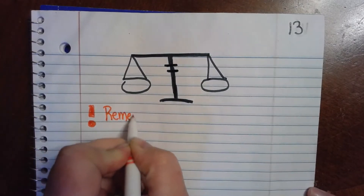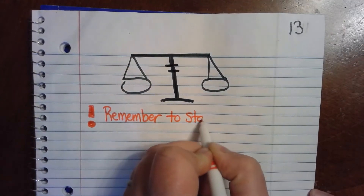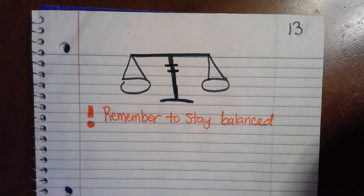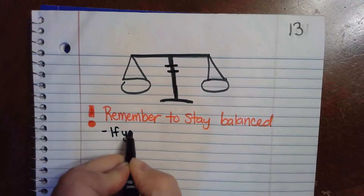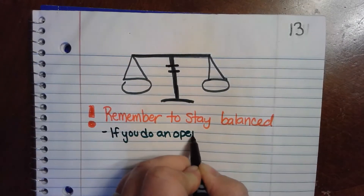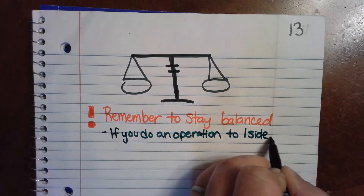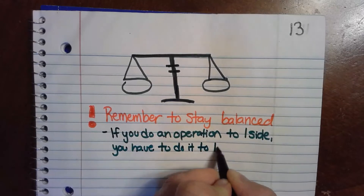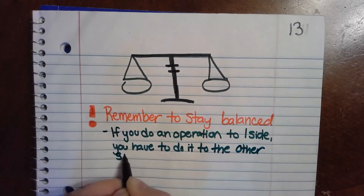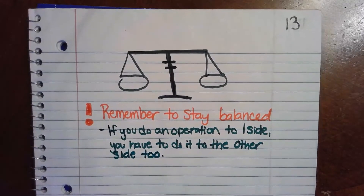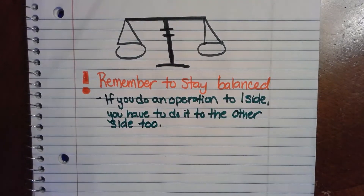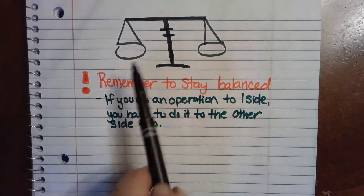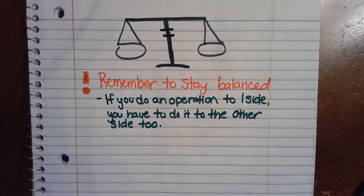We need to remember to stay balanced. What that means is: if you do an operation to one side, you have to do it to the other as well. Anytime we're working with equations, this is a very important rule. If you add five to this side, you have to add five to this side. If you subtract five from this side, you have to subtract five from this side — otherwise those scales aren't balanced.